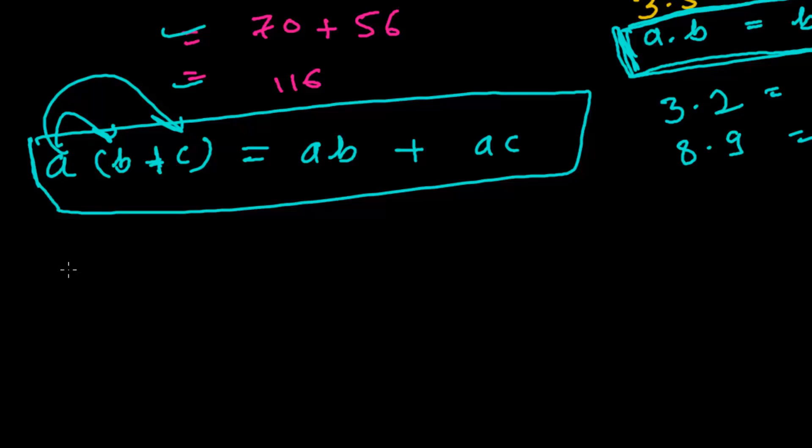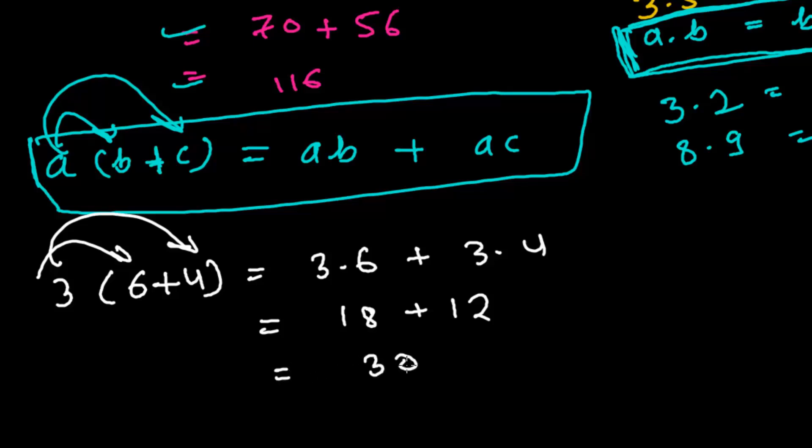Now let's say I can take any numbers. Let's say this is 3, let me go with the smaller numbers, 6 plus 4. So it's going to be 3 times 6, first to this, and then 3 times 4, which is 18 plus 12. That is going to give me 30.